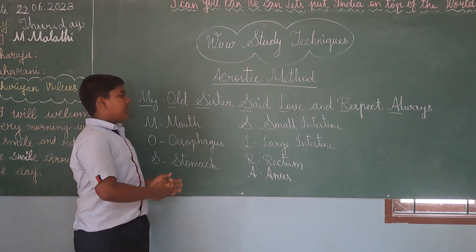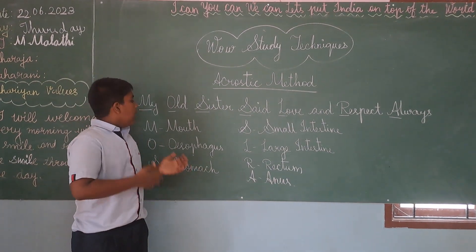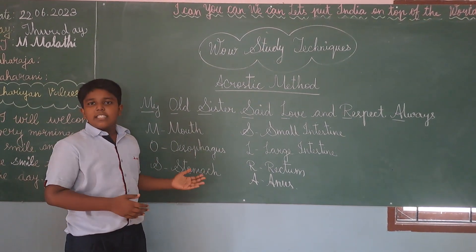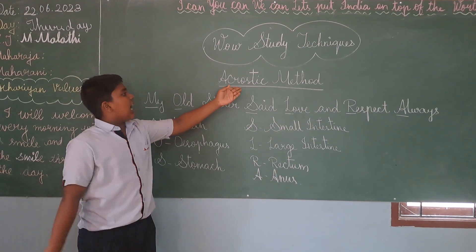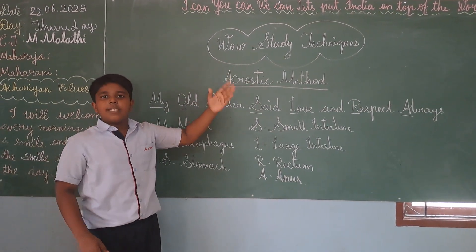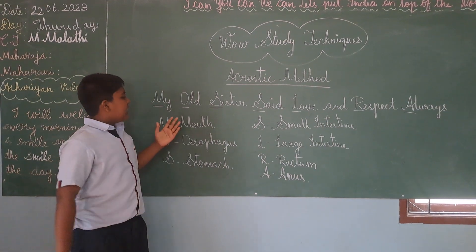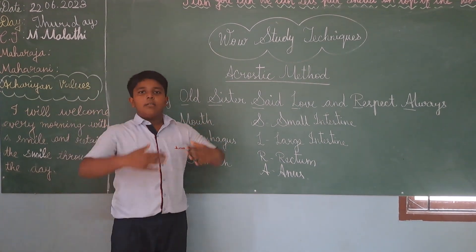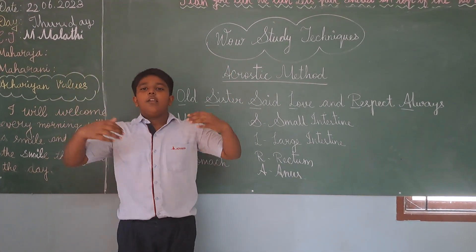These are the organs that are present in the human digestive system. Using this acrostic method of mnemonic study technique, I can easily remember the digestive system of the human body. Thank you. Love you all.